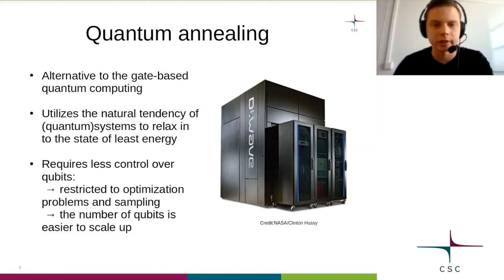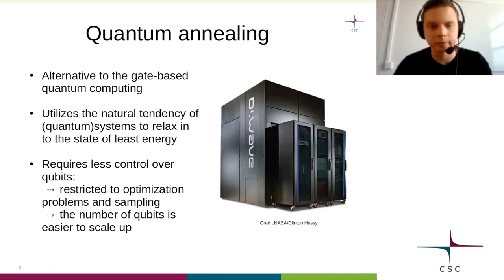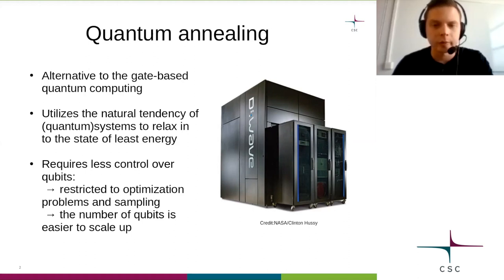Basically what is done is that the quantum system — that is the processor of the quantum annealer — is allowed to relax to an optimal energy state under constraints that represent the problem to be solved. Because there is not much external control over the computation, but quantum mechanics and the energy conservation principle are allowed to do the work, these quantum annealers are easier to build and scale up than gate model quantum computers. They are also not so sensitive to errors. As a drawback though, quantum annealers are restricted to solving optimization problems and related things such as sampling.